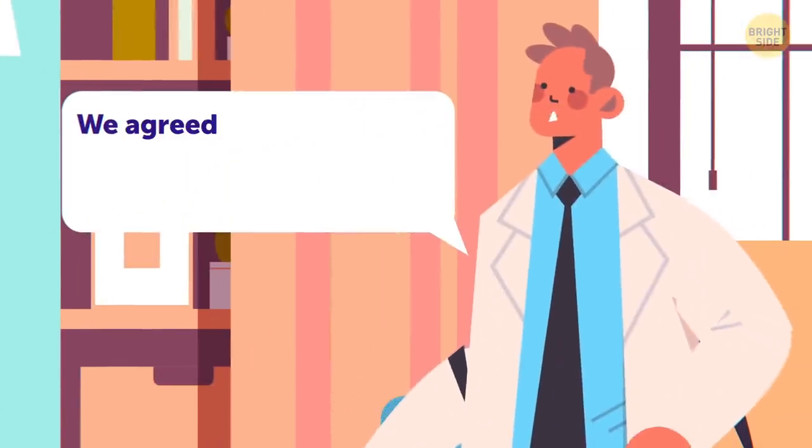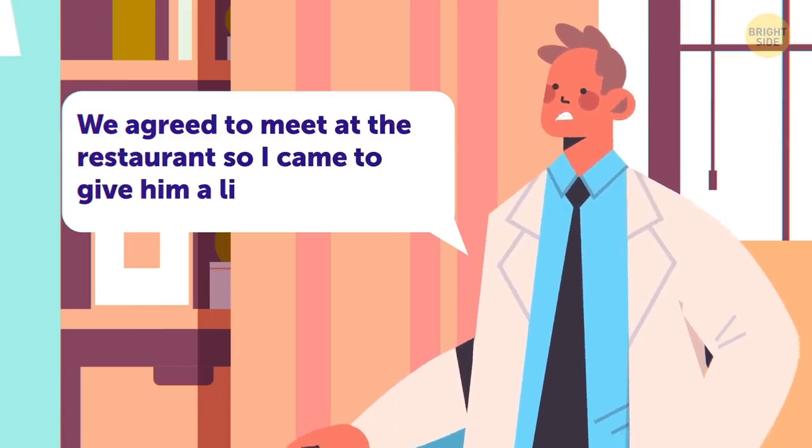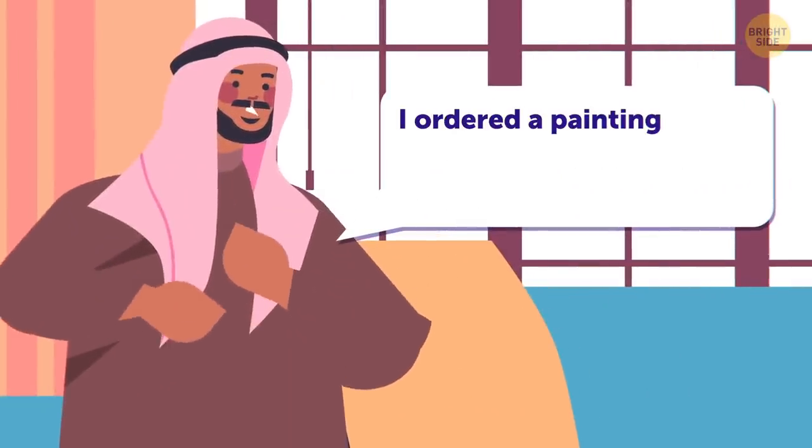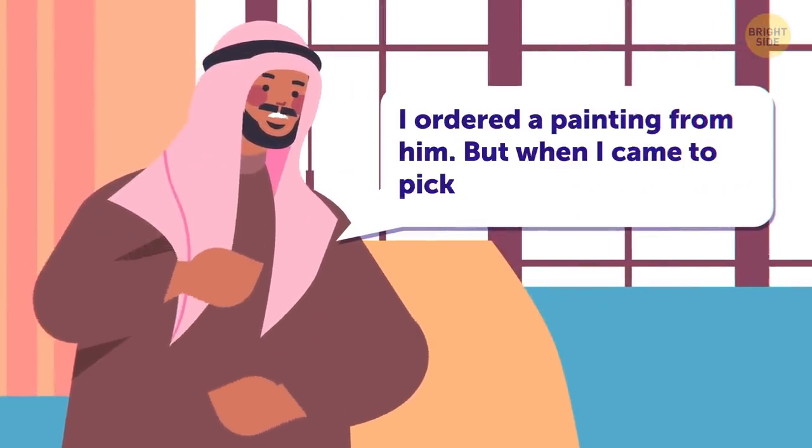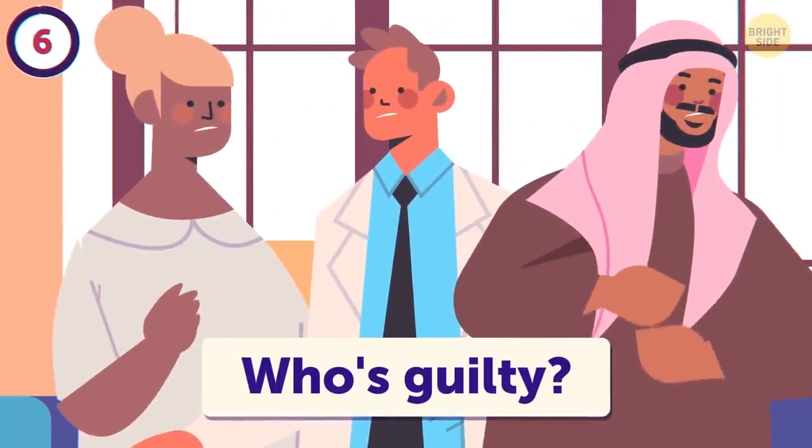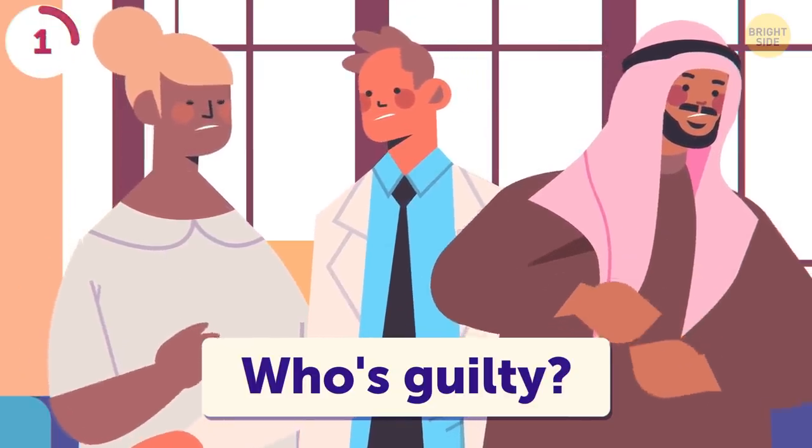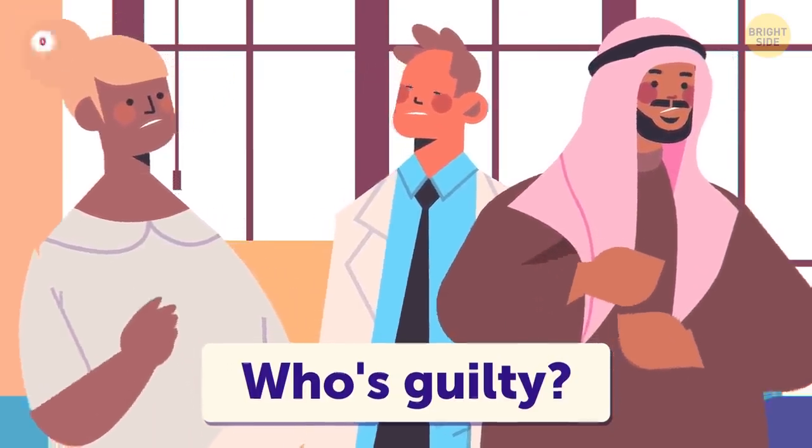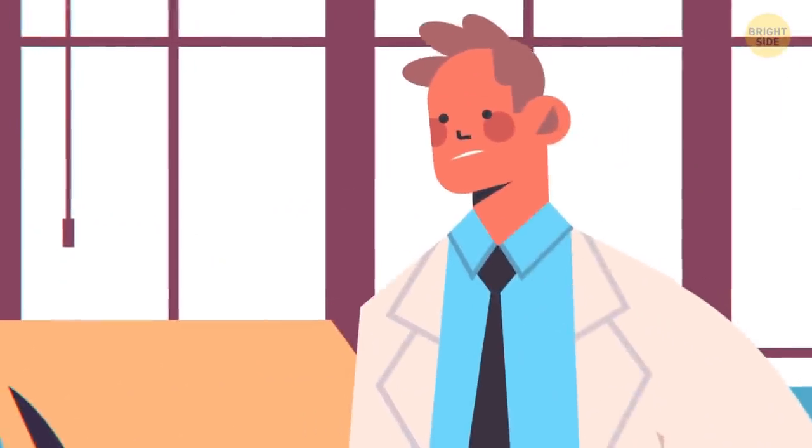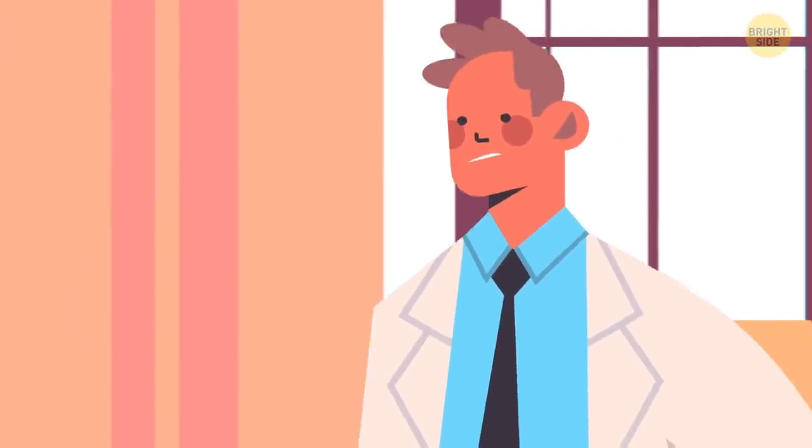Zachary told the police the artist was his friend. We agreed to meet at the restaurant, and I came to give him a lift. And Cooper said, I ordered a painting from him, but when I came to pick it up, I saw the police. Who's guilty? It's Zachary. If they agreed to meet at the restaurant, why did he come to the artist's apartment?